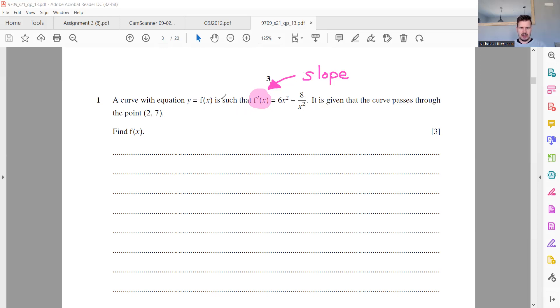Okay, so they have told us that we have an equation y equals f of x. Now, we don't know f of x, but they've told us f dash of x, which is the slope. Now, normally what they do is they show us f of x, and then we have to work out the slope. Here, they've done it the other way around.